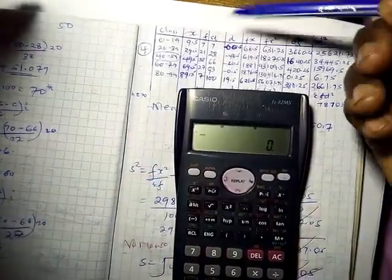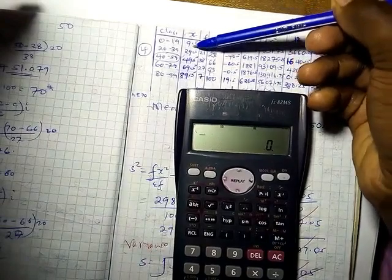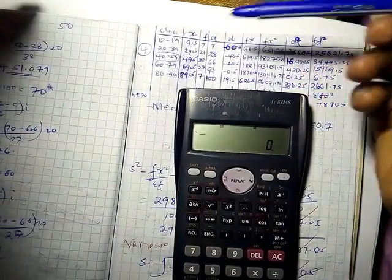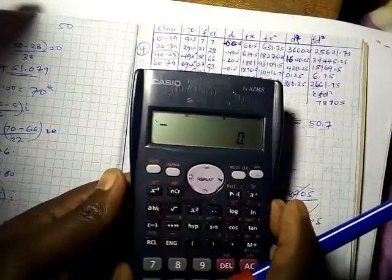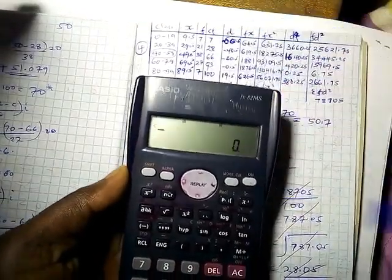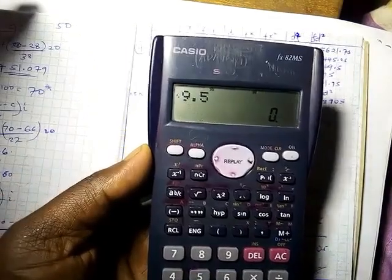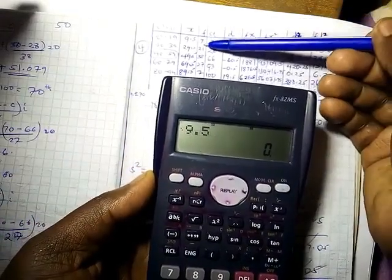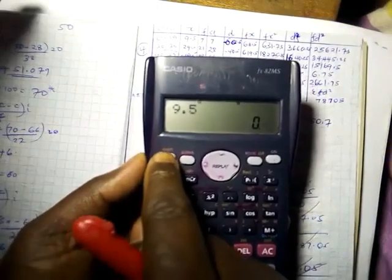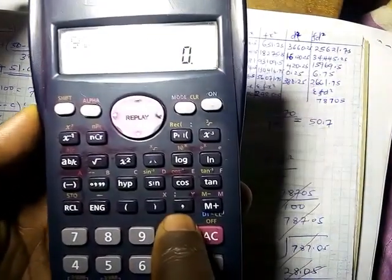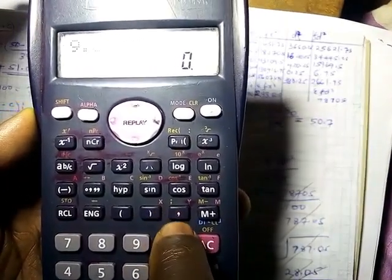We are ready. We have x which is the midpoints. So here we are using midpoints and frequency. The first midpoint we have is 9.5, so you press 9.5. Because 9 has a frequency of 7, you press shift and then this comma here, this comma here.